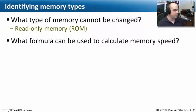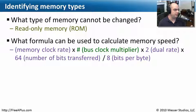Here's another question: what formula can be used to calculate memory speed? This is the formula you need to memorize to take with you on the exam. If you remember that the memory clock rate times the bus clock multiplier - and that's the one that's going to be one, two, or four